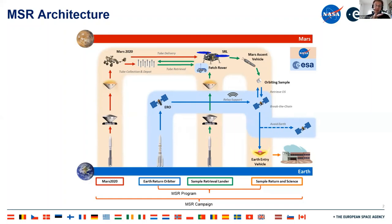The second 2026 launch will be a larger Sample Retrieval Lander carrying a European fetch rover and a Mars Ascent Vehicle rocket. Both Mars 2020 and the fetch rover can deliver samples to the rocket as a backup system. The rocket will launch samples to a 350-kilometer Mars orbit, where the Earth Return Orbiter must detect and capture the sample container — essentially a ball about 35 centimeters in diameter — from over 1000 kilometers away, before transferring it to a capsule for ballistic Earth entry.